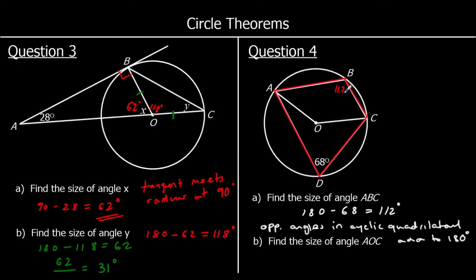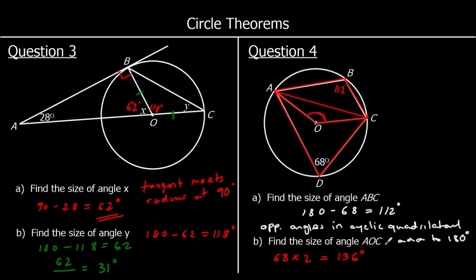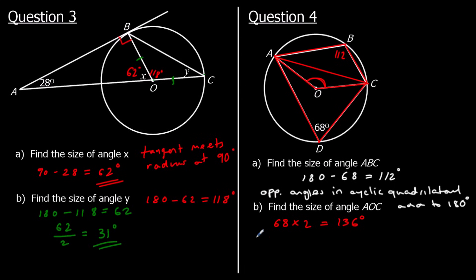Now find the size of angle AOC. We have 112 at ABC, and AOC is the angle at the center. Drawing a line, we can see that AOC and 68 degrees come from the same segment. The angle at the center is twice the angle at the circumference, so 68 × 2 = 136 degrees.